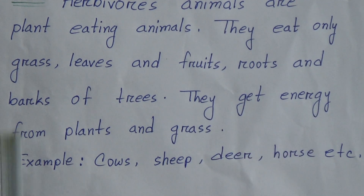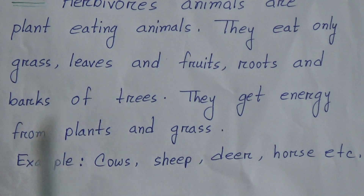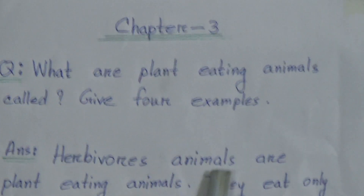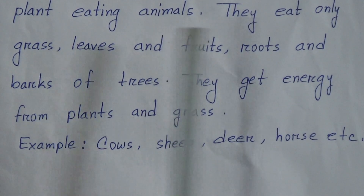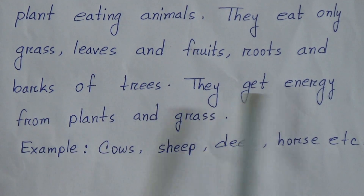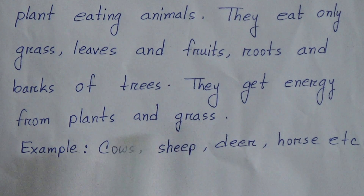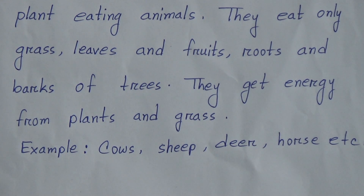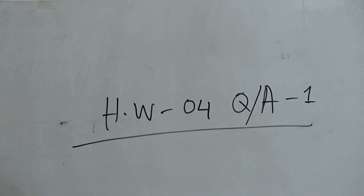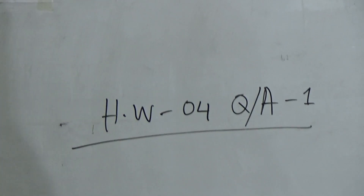They get energy from plants and grass. Examples are: cow, sheep, deer, horse, etc. Here is only one question and answer, and this question answer will be your homework.